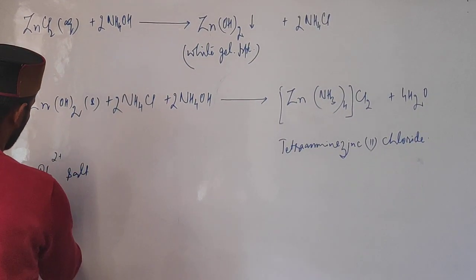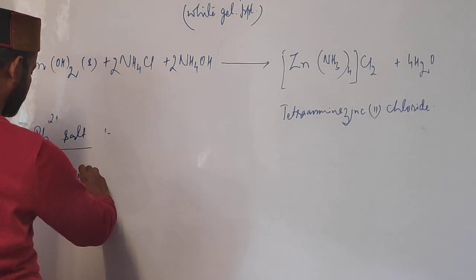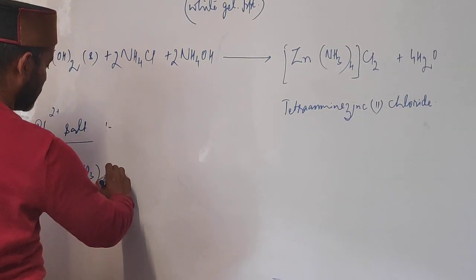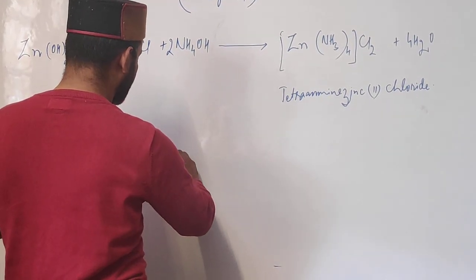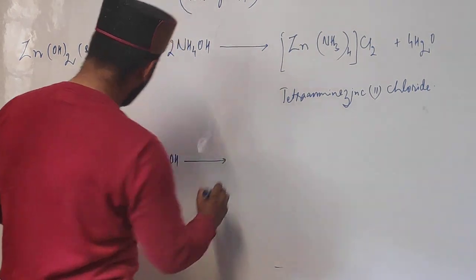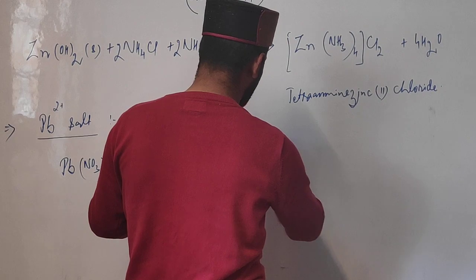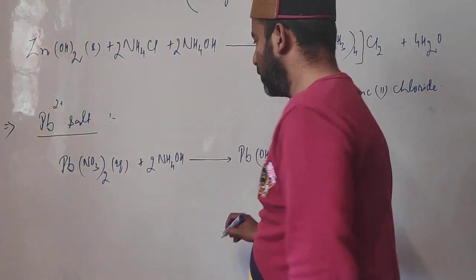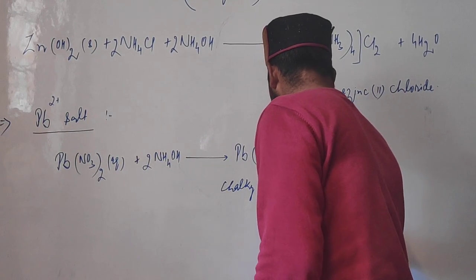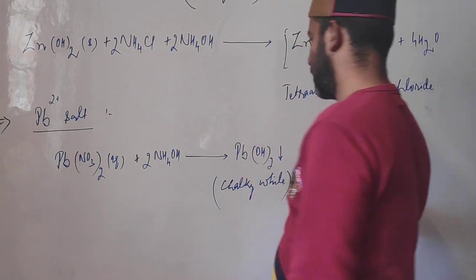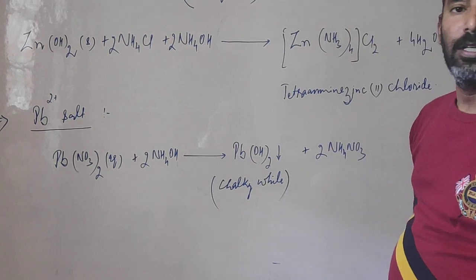The only water-soluble salt of lead is lead nitrate. Take lead nitrate — its solution is colorless. When we add ammonium hydroxide in small quantity, the lead ions get precipitated as lead hydroxide Pb(OH)2, which being insoluble forms a chalky white precipitate. Ammonium nitrate, being water soluble, remains in solution.